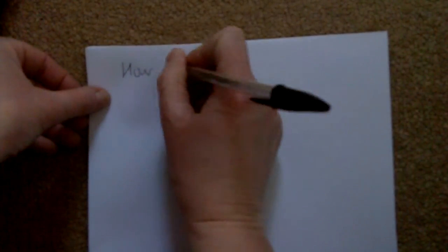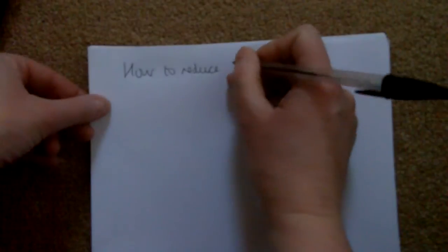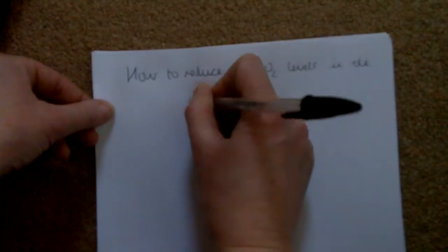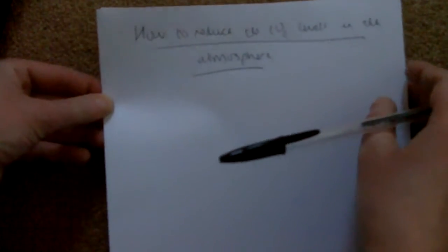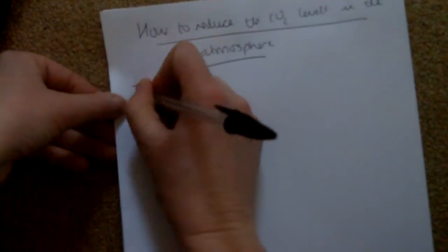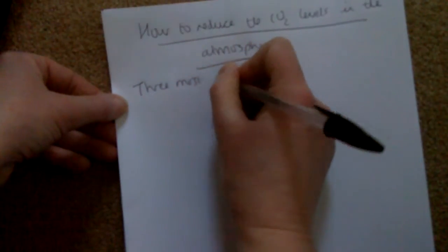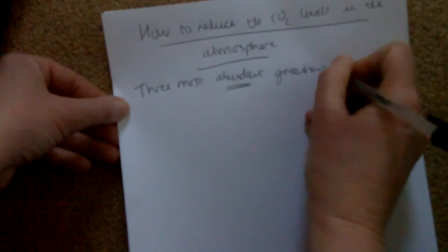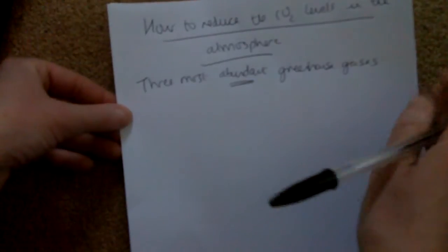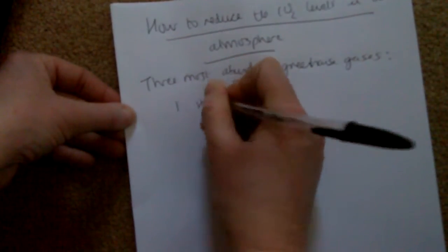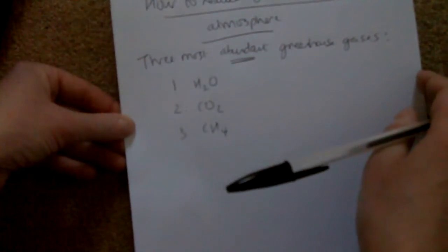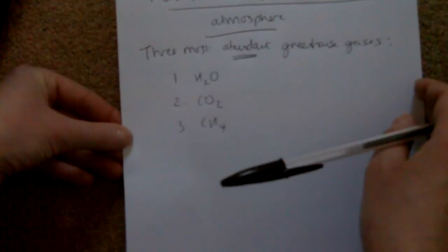This is how to reduce the CO2 levels in the atmosphere. First, let's do a bit of revision. The three most abundant greenhouse gases that contribute to global warming are: number one, water; number two, CO2; number three, methane. These are the most abundant greenhouse gases that can contribute to global warming.